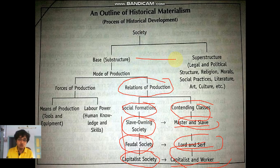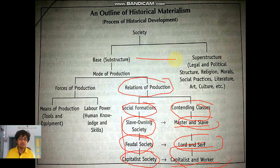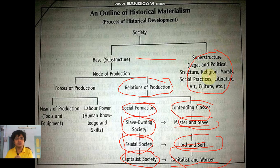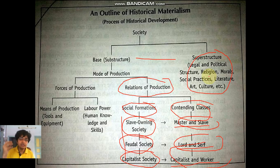Marx throughout his whole life did not give much grave importance to the superstructure. The importance of the superstructure has been emphasized by post-Marxists from Antonio Gramsci onwards. Marxist literary theory is basically about giving importance to the conception of the superstructure. While the modes of production are part of the base, the forces of production and relations of production will eventually give birth to social formations. This is the outline of historical materialism.